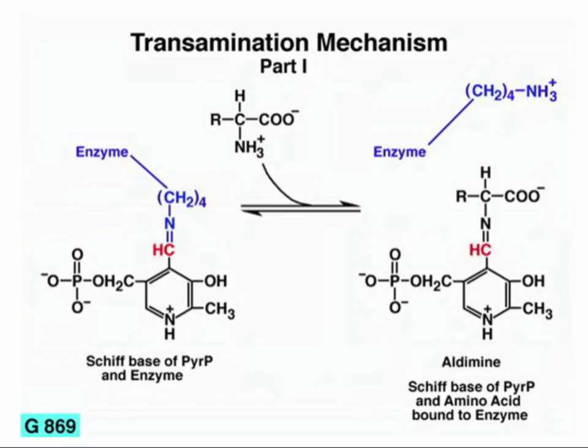This reaction mechanism involving pyridoxal phosphate occurs during the transamination of amino acids. In this mechanism a covalent intermediate is formed between the amino acid substrate and the pyridoxal cofactor. The association of the pyridoxal cofactor provides an alternate transition state intermediate in place of an anionic species that would form in the uncatalyzed reaction.